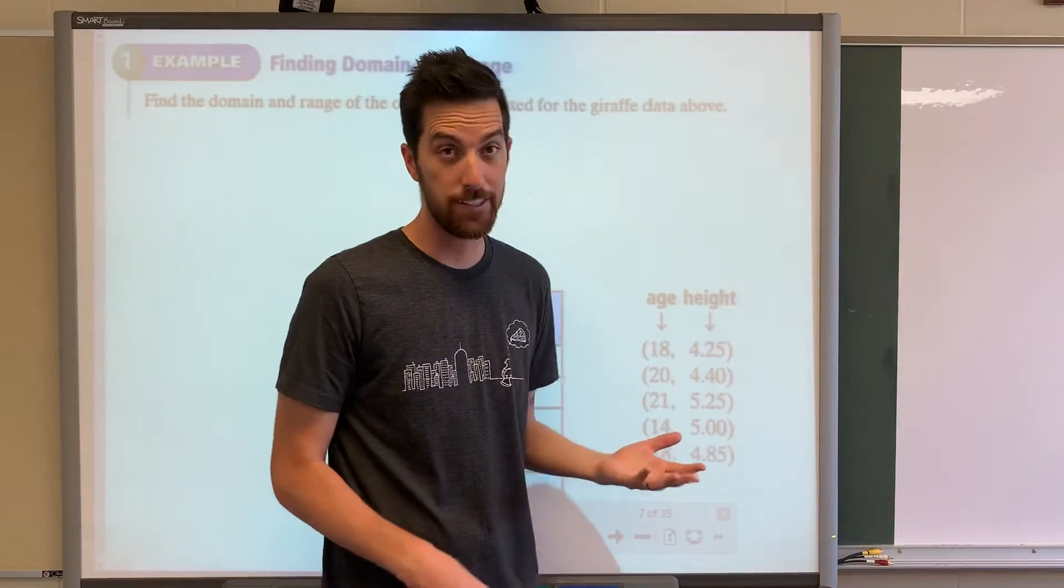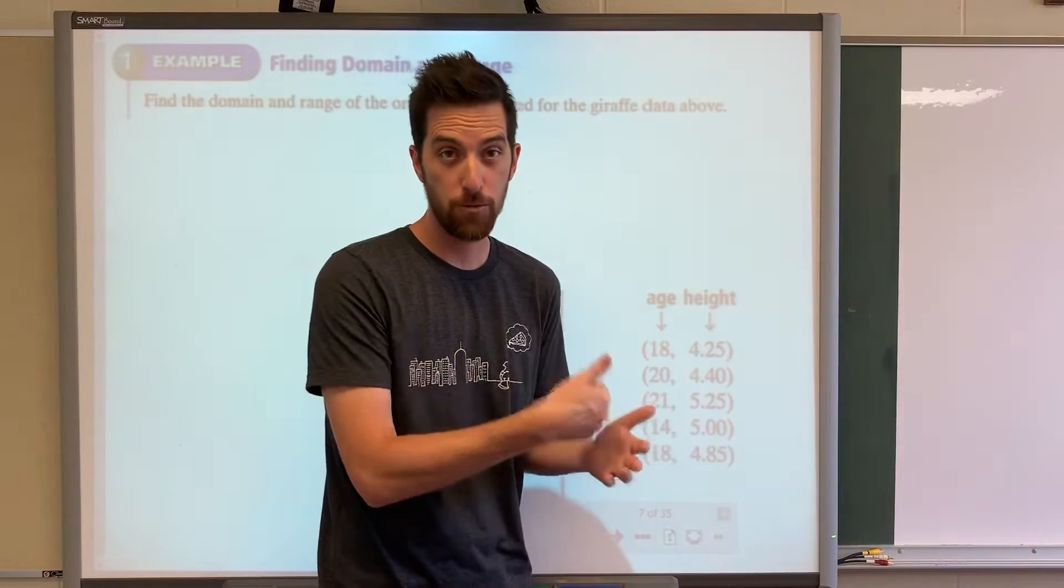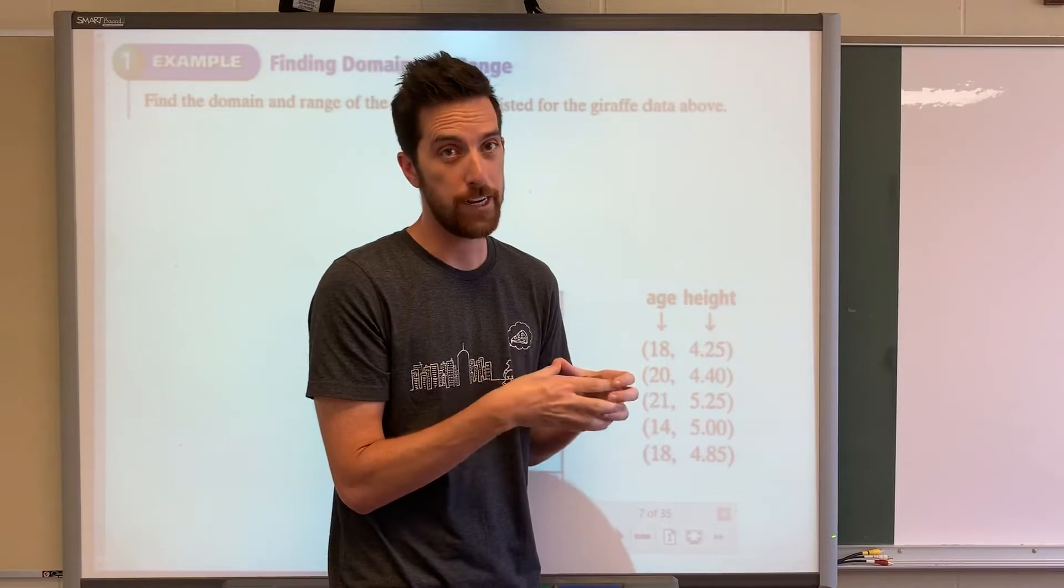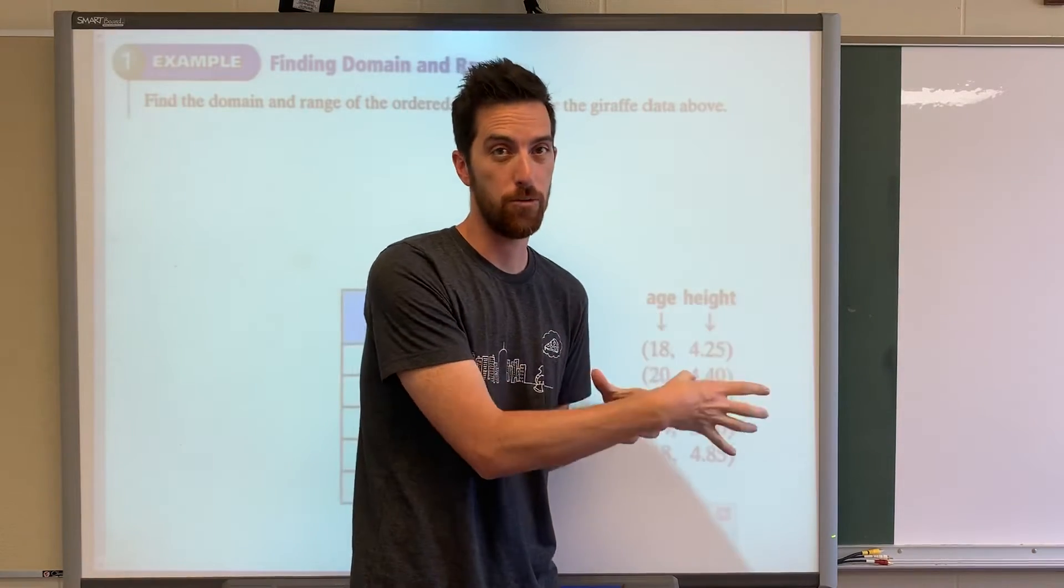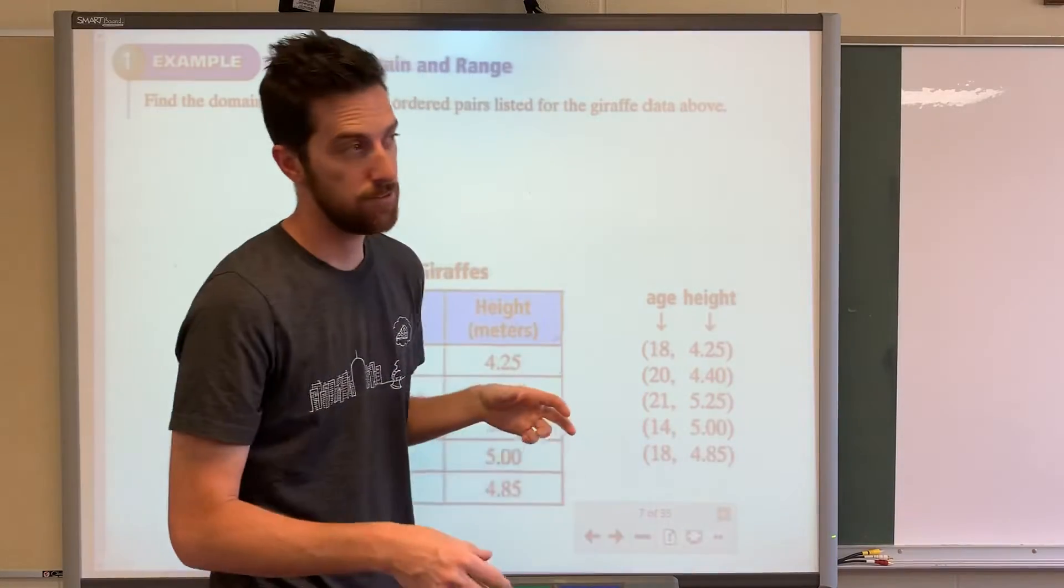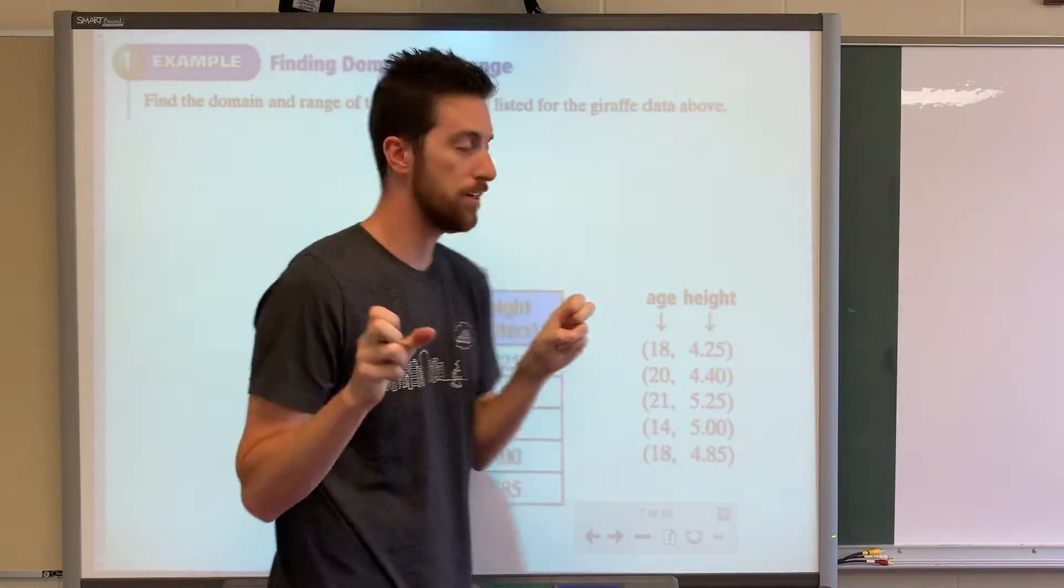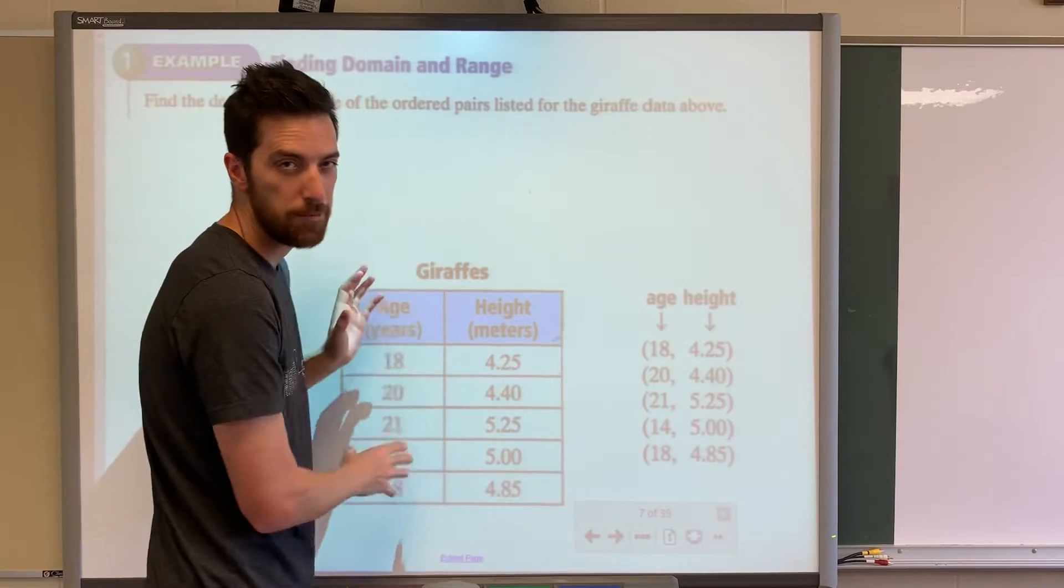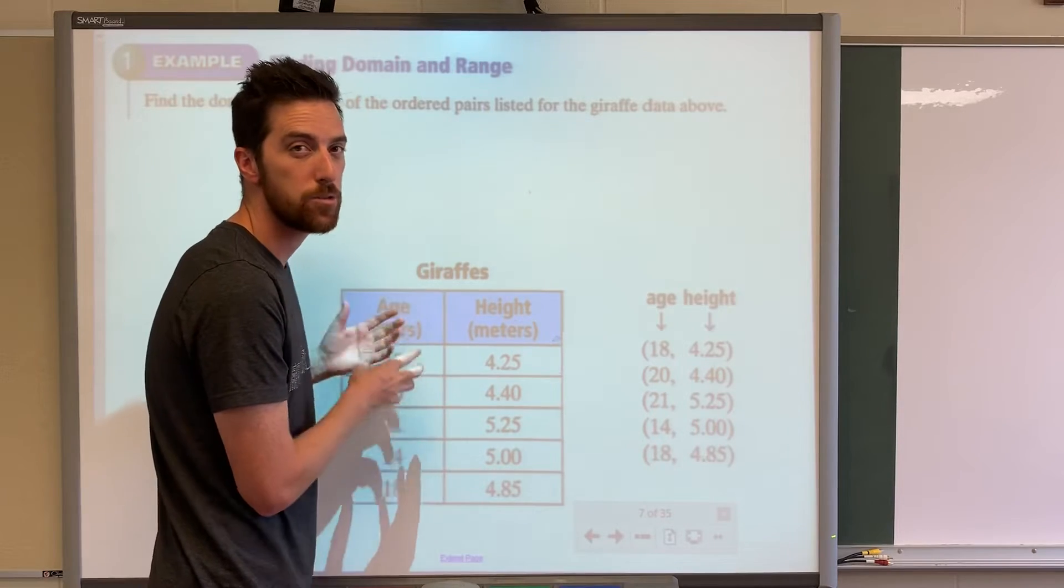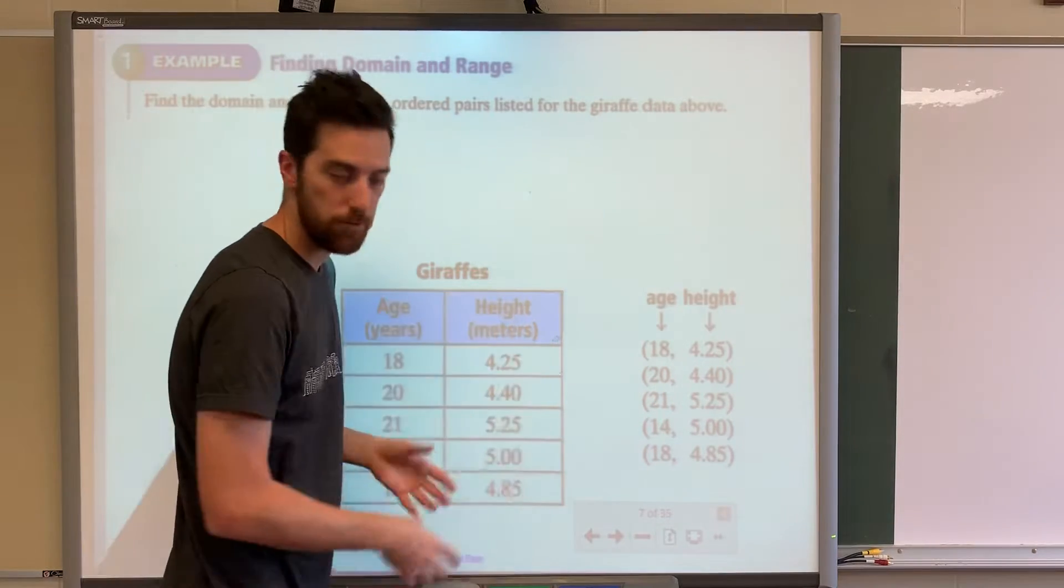Now the nice thing is the x value, the first one, is always your domain and the y value is always your range. Sometimes they'll call it input, output. The first column is typically your input, so those would be your domain. The second column would always be your range.